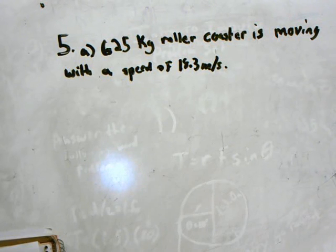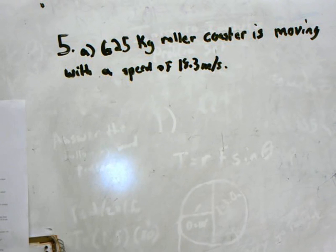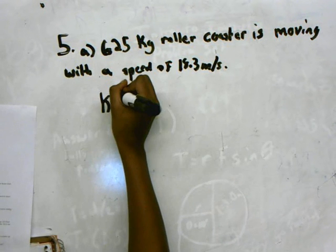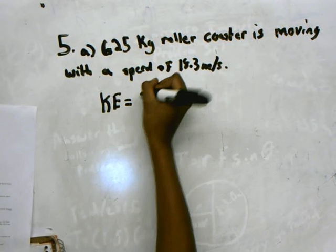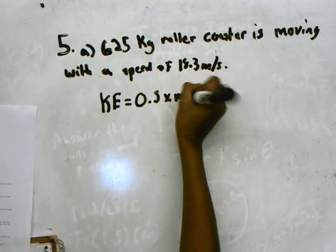Determine the kinetic energy of the roller coaster. Okay, so what you want to do is, the first thing you want to do is write down the formula for kinetic energy. It equals 0.5 times m times v squared.